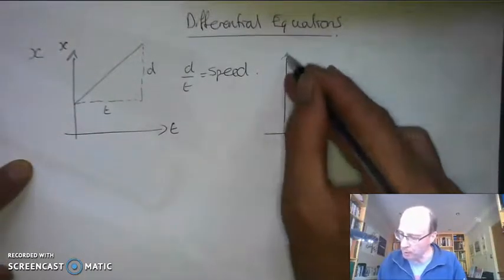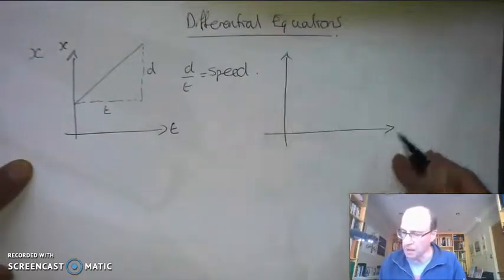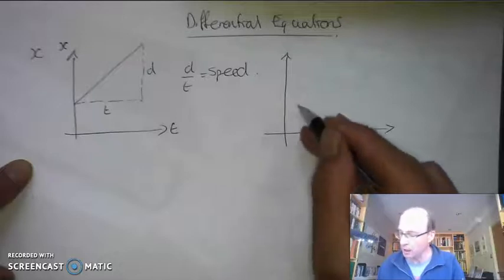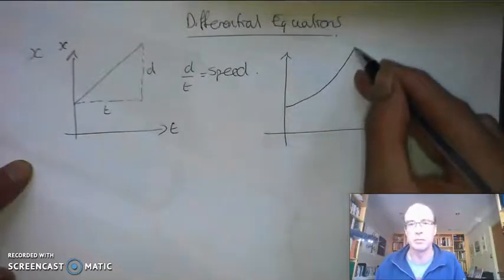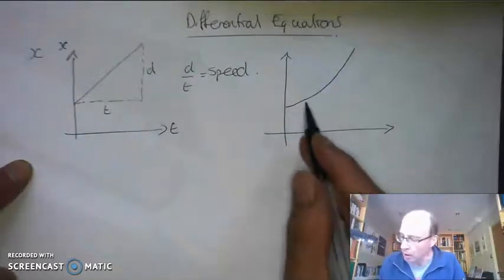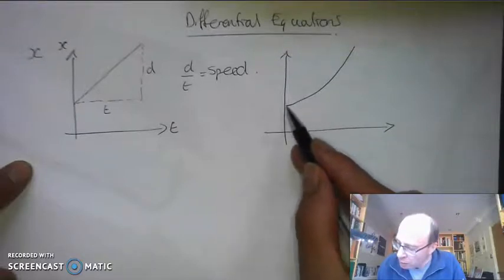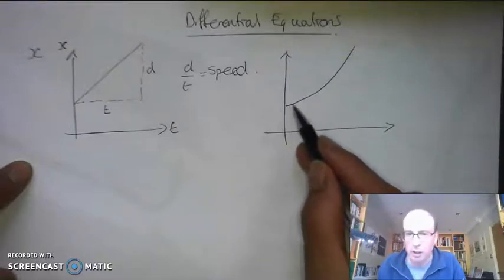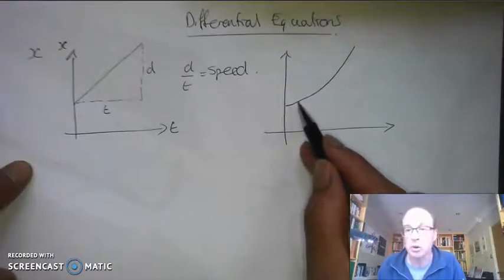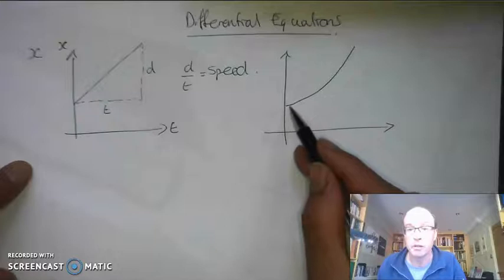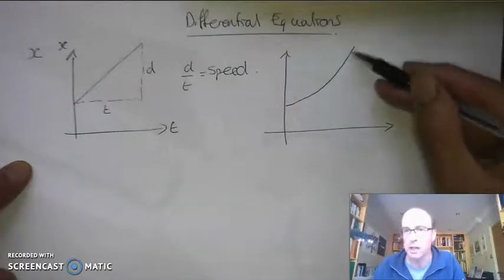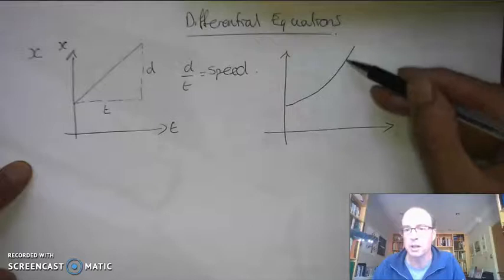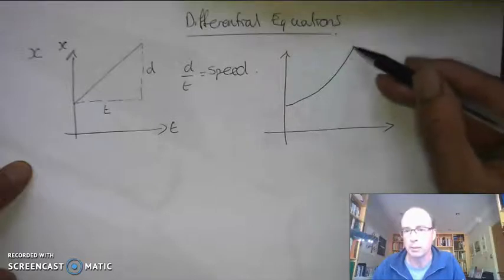Let's have a look at another example, a little bit more interesting. This time, instead of travelling at a constant speed, it's getting faster. So I've got a curve — the gradient of that curve at the start is quite shallow, so the object's not travelling very quickly. Towards the end, the gradient of that curve is getting much steeper, so the object's moving much more quickly.